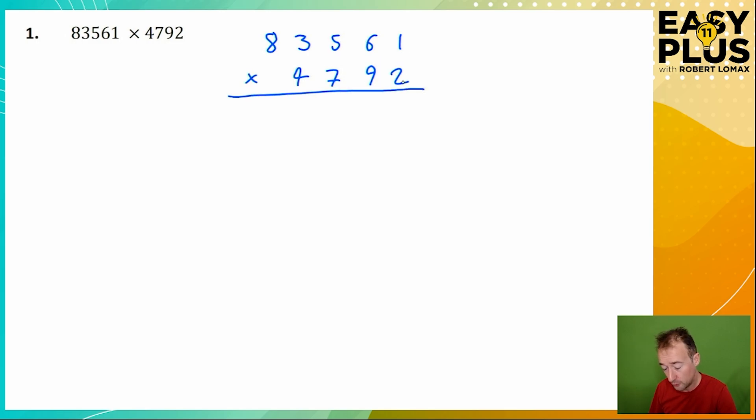We start at the right-hand end. 2 times 1 is 2. 2 times 6 is 12, and we carry the 1. 2 times 5 is 10, we've got the carried one which makes it 11.